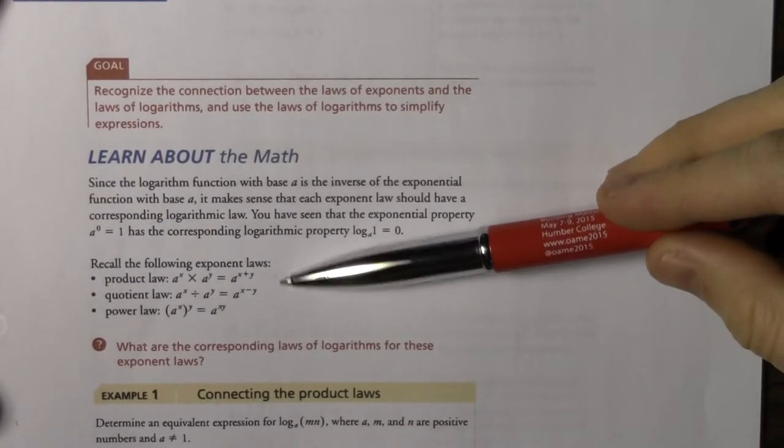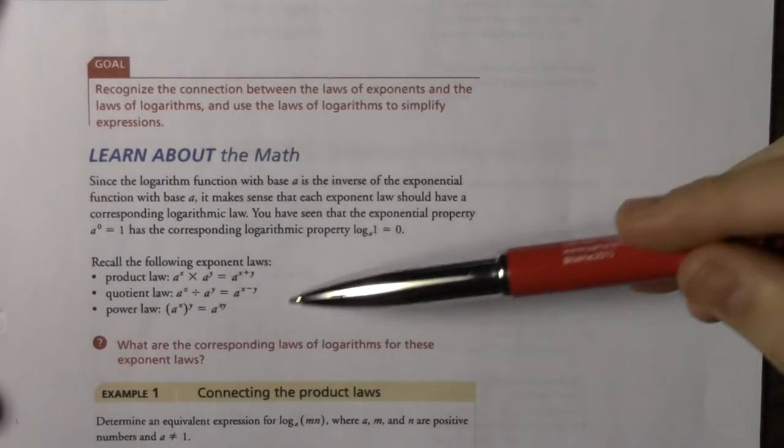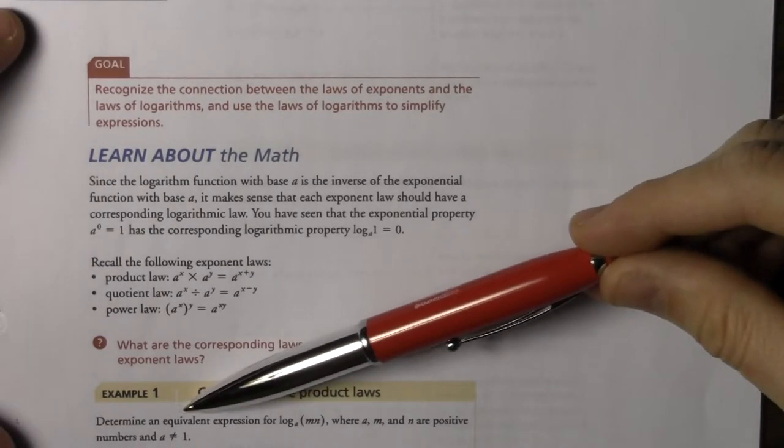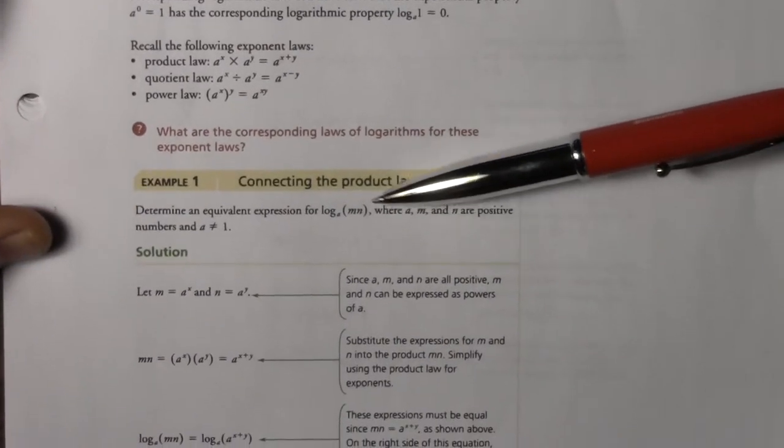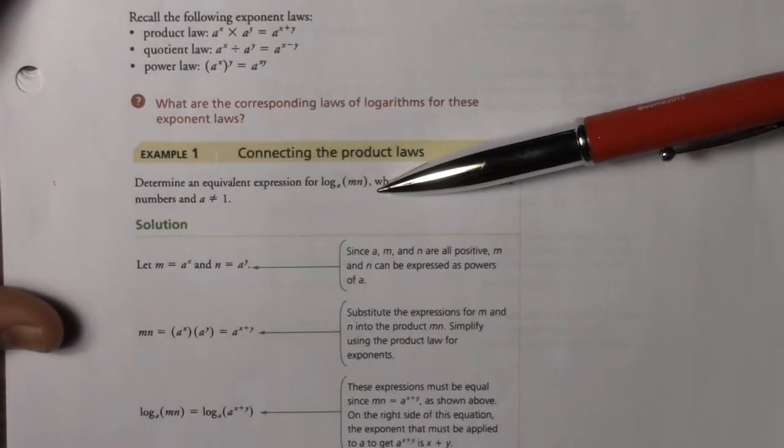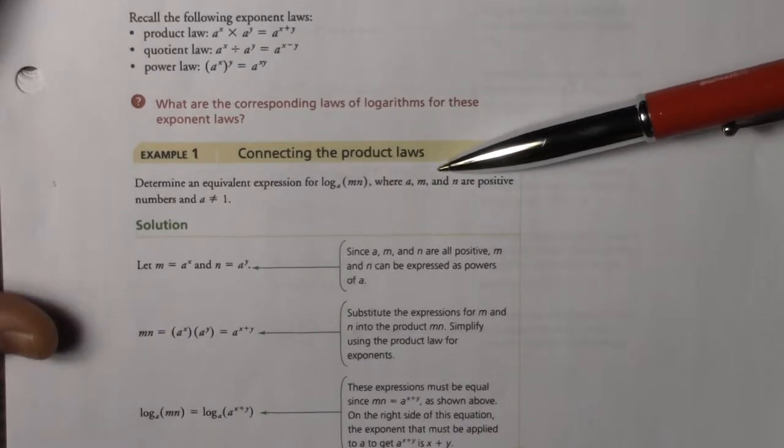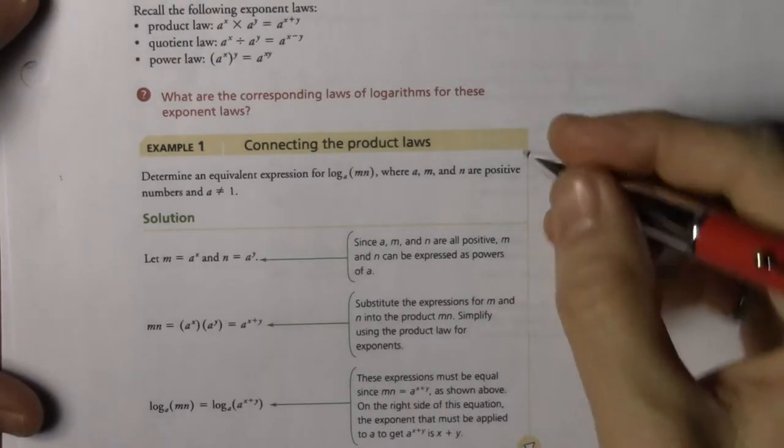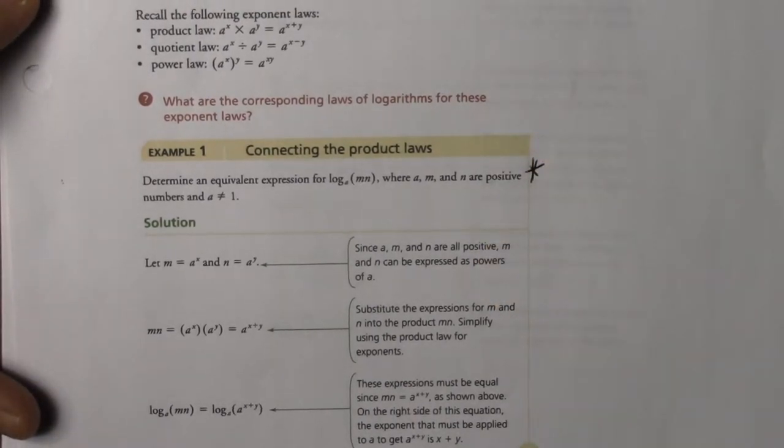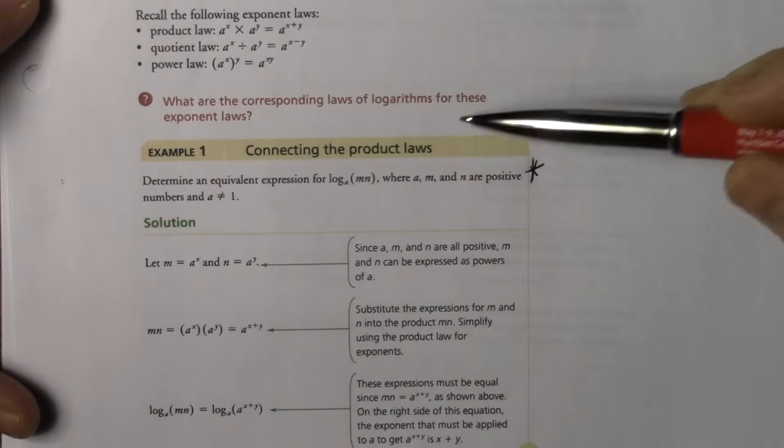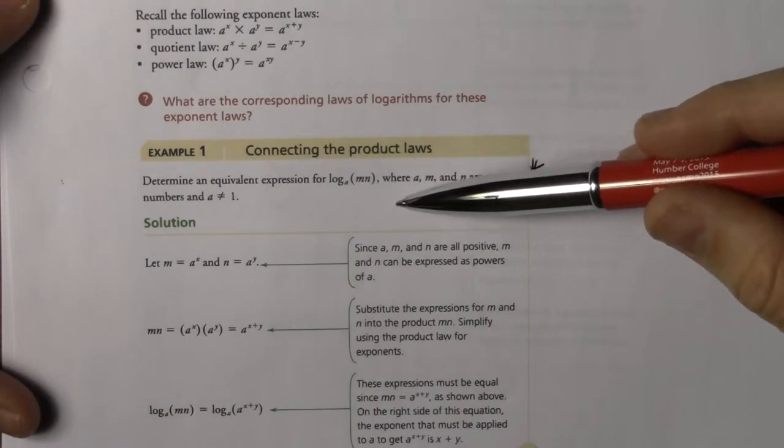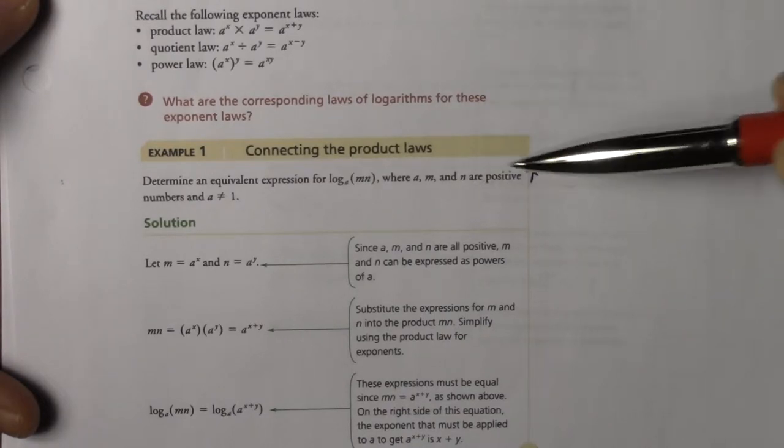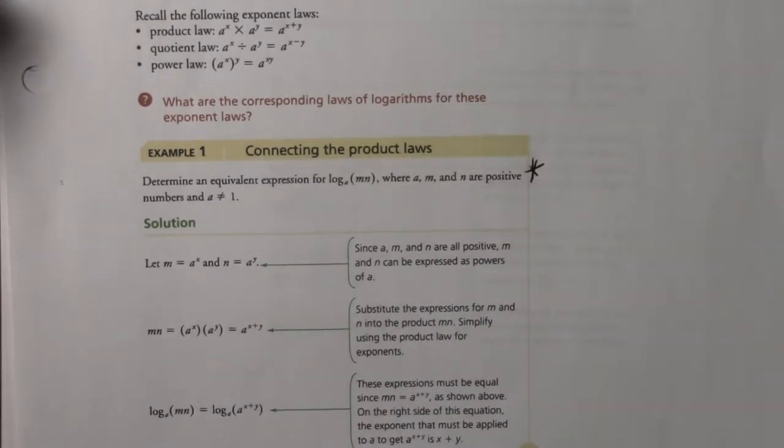Alright, so here's our exponent laws that we just talked about. So the question is what are the corresponding laws of logarithms for each exponent law? So it says determine an equivalent expression for log base a in brackets m times n where a, m, and n are positive numbers and a is not equal to 1. So that's important right? This law here that we're going to use doesn't work for all values of m and n and a. They have to be specific a, m, and n they all need to be positive and a cannot be 1.